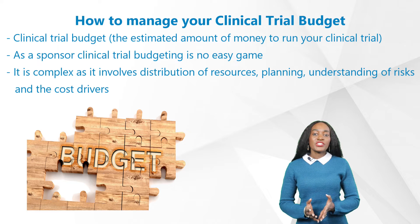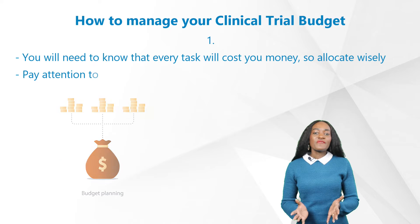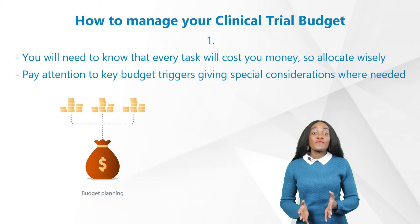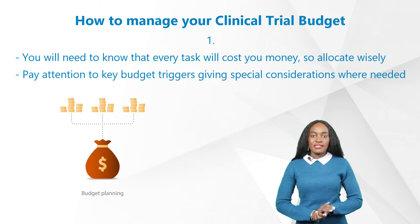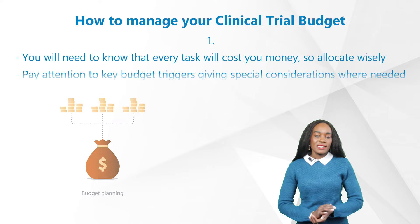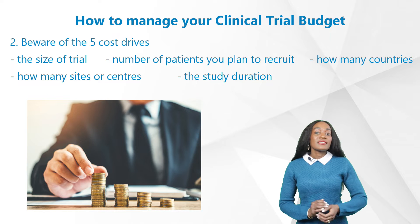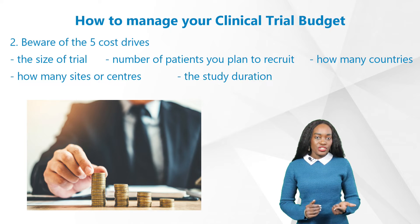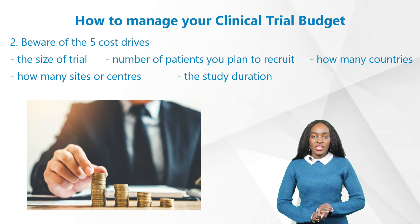This can be extremely challenging, especially if you have a great idea for an innovation but are on a tight budget. Here are a few things you may want to know before you start distributing your budget. First, every task will cost you money, so allocate wisely — pay attention to key budget triggers, giving special considerations where needed. Second, beware of the five cost drivers: size of trial, number of patients you plan to recruit, across how many countries, how many sites or centers you will involve, and the study duration.